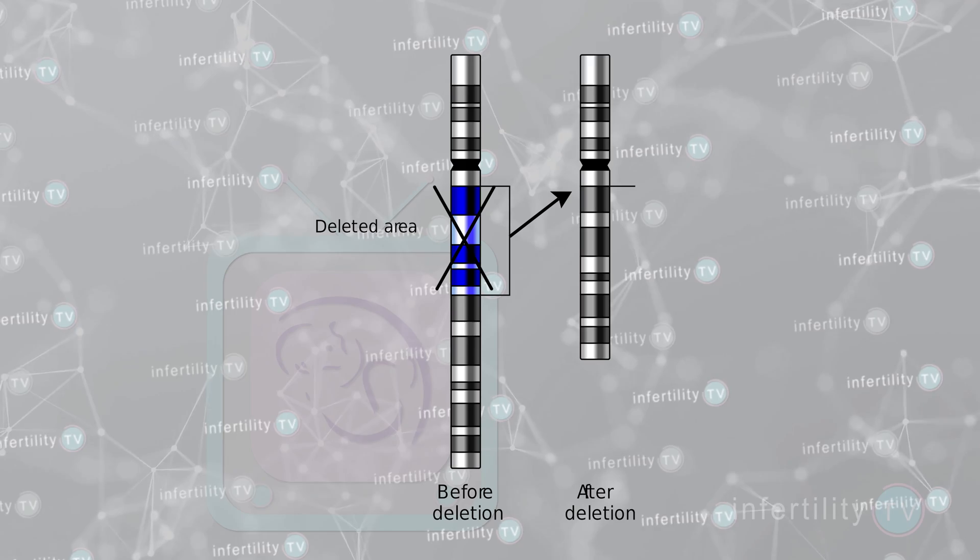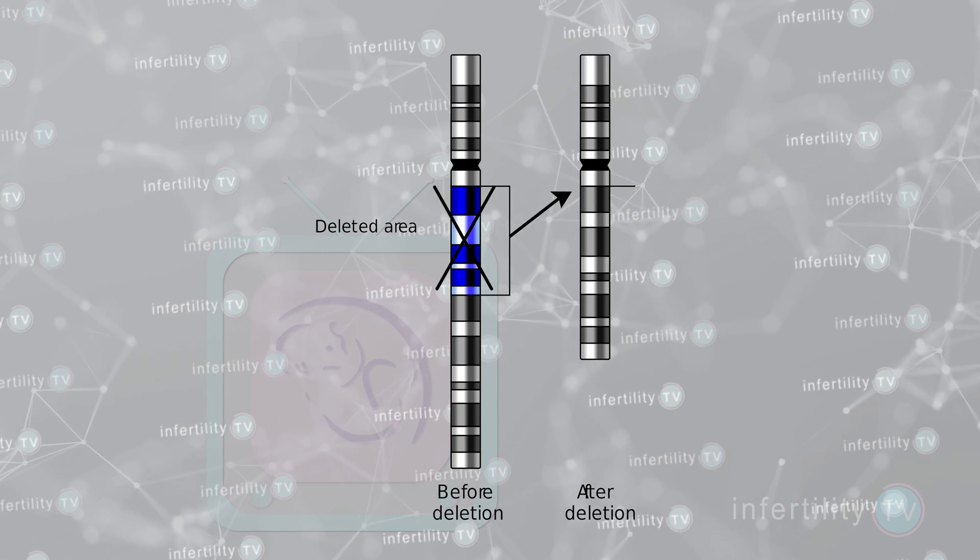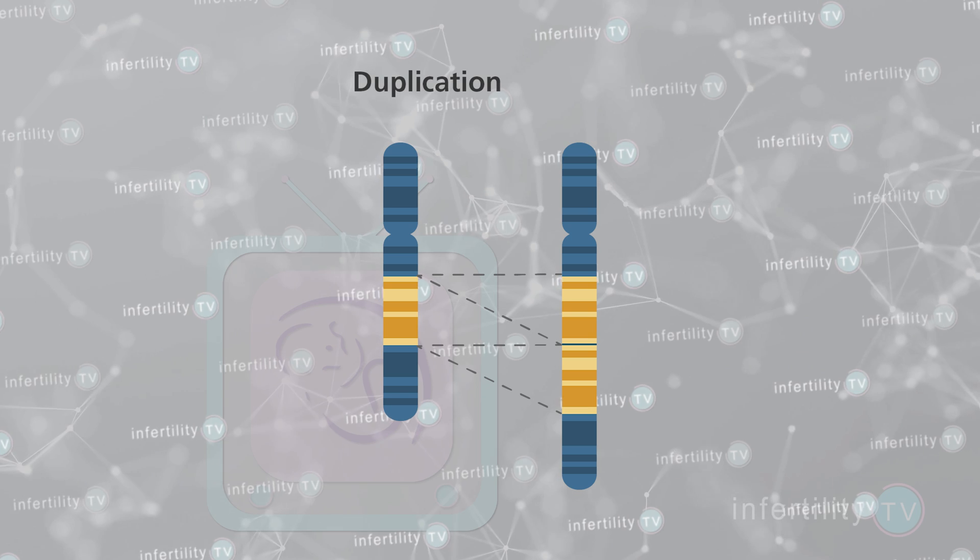Some embryos have the correct number of chromosomes, but the chromosomes themselves are abnormal in some way. Sometimes chromosomes can have a missing chunk — these are called deletions. Sometimes they can have an extra piece, called a duplication. Many of these abnormalities can be detected with current pre-implantation testing technologies. These problems cannot be prevented or fixed; the strategy is to identify these abnormalities and dispose of those embryos rather than transfer them.